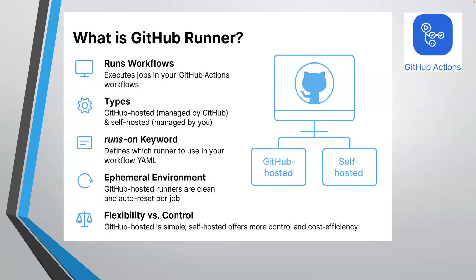So what do you mean by GitHub Runners? GitHub Runners are nothing but build agents where the GitHub Actions workflow is executed. You have two different types: GitHub Hosted Runner and Self-hosted Runner.